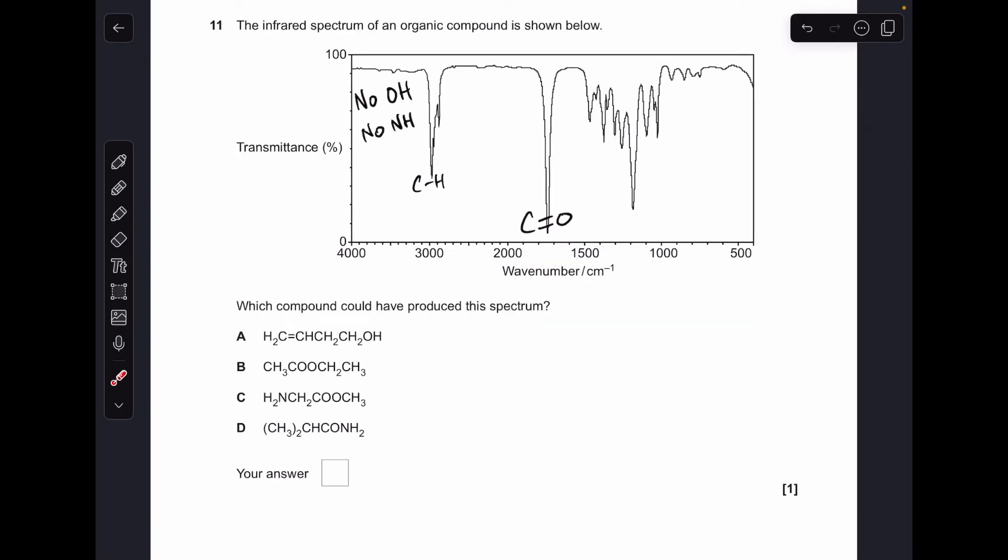Moving on to number 11, you can see I've already annotated the infrared spectrum. So I'll just run through this. There's no activity up here, sort of between 3,000 and 4,000. That means we don't have any OH or NH bonds in the molecule. This peak here we always see, and that's due to CH, so that's no help at all. This is very helpful. This is a C double bond O. So we can't have A because we don't have an OH group. We can't have C or D because we don't have these NH bonds. So the answer is B, and the C double bond O is this here.